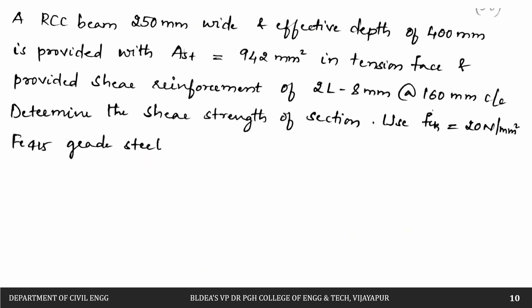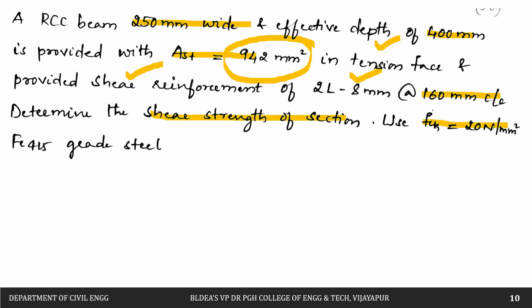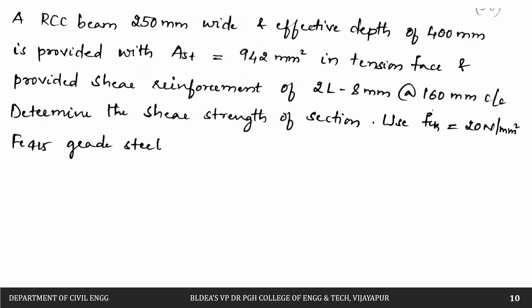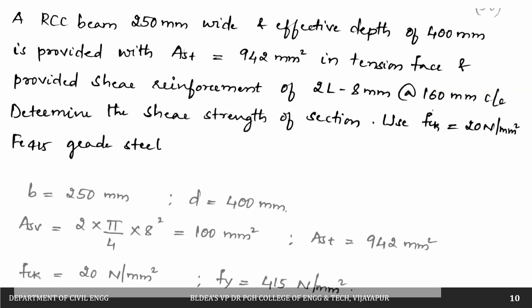Now let us solve a second problem. A beam of width 250 mm and effective depth d = 400 mm is provided with Ast = 942 mm² in the tension zone, and shear reinforcement of 2-legged 8 mm dia bars at 160 mm c/c. Determine the shear strength of the section using fck = 20 N/mm² and fy = 415 N/mm². This is the reverse of the previous problem — reinforcement is given, and we must find the shear capacity.